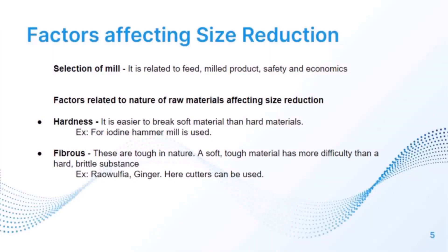For the selection of a mill, factors include feed, milled product, safety, and economics. Factors related to the nature of feed materials affecting size reduction include hardness and fiber content. For hardness, it is easier to break soft material than hard material — for example, iodine uses a hammer mill. For fibrous materials, they are tough in nature; a soft tough material is more difficult to break than a hard brittle substance — for example, rawolfia and ginger, where cutters can be used.